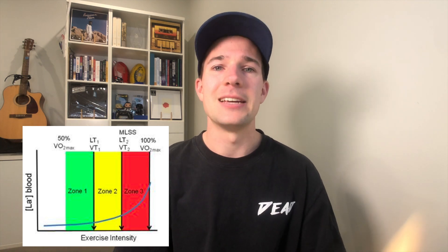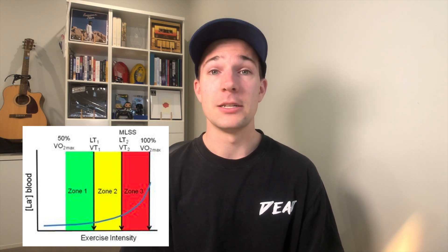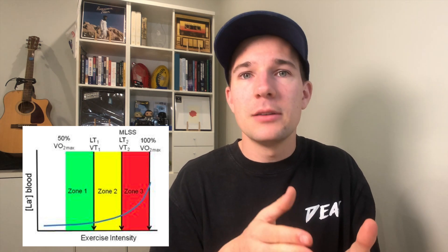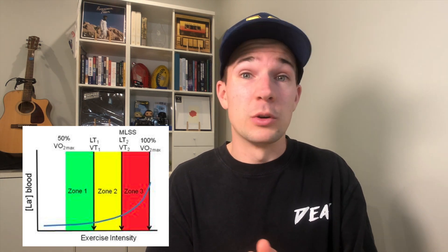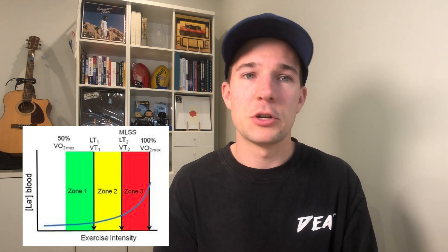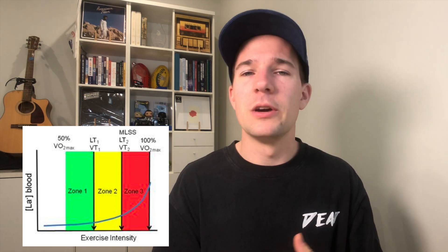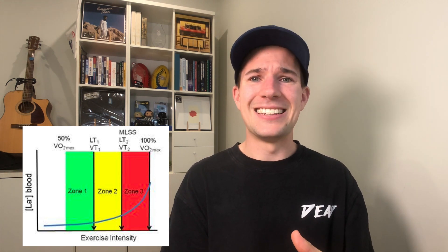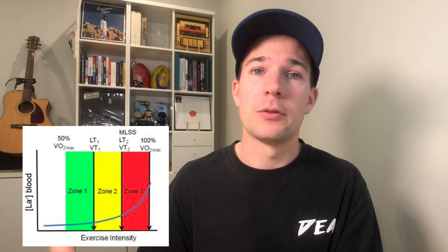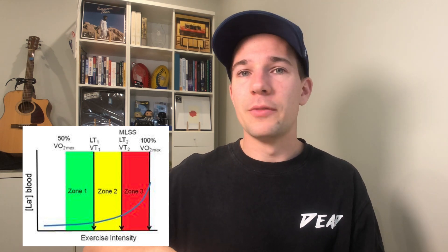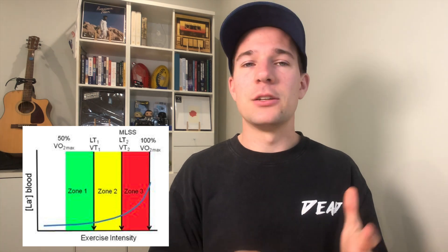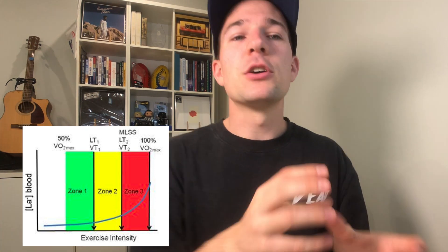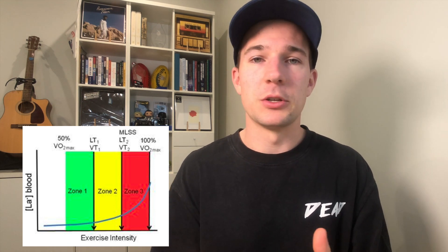Below LT1 is your long, slow base work and all-day pace stuff - really good aerobic capacity work. Between LT1 and lactate threshold 2, or what's normally termed our functional threshold or anaerobic threshold, that's all our more threshold-based stuff: tempo, sweet spot, sub-threshold, threshold intervals - all mixed in there. And then anything above that anaerobic or functional threshold intensity is all our really high-intensity stuff. In my five-zone system, that maps to zones 2, 3, and 4.